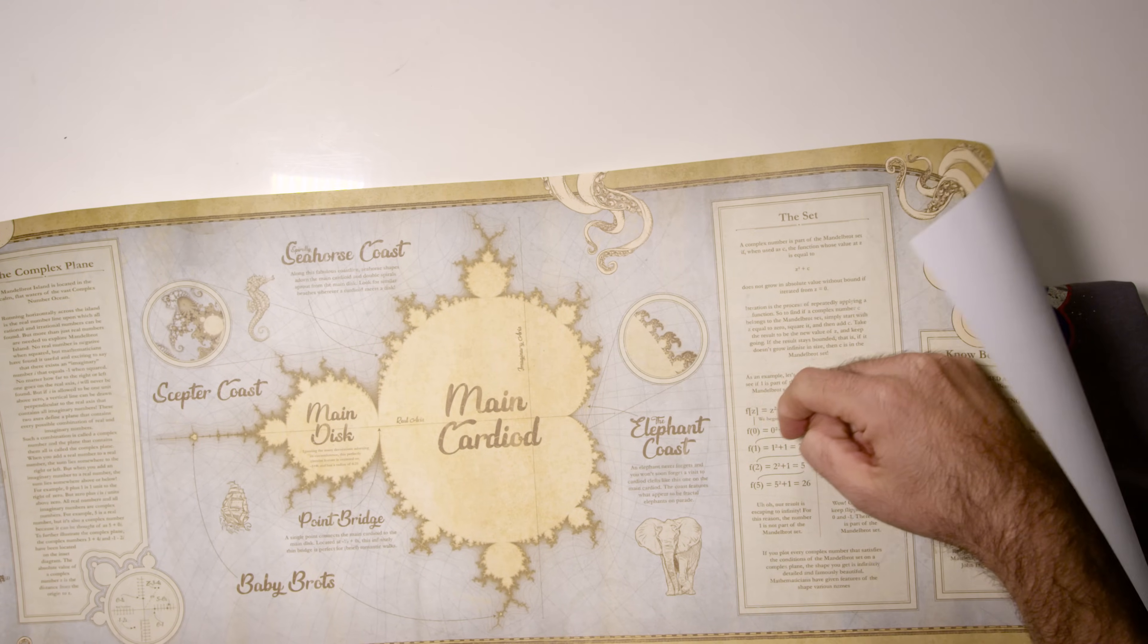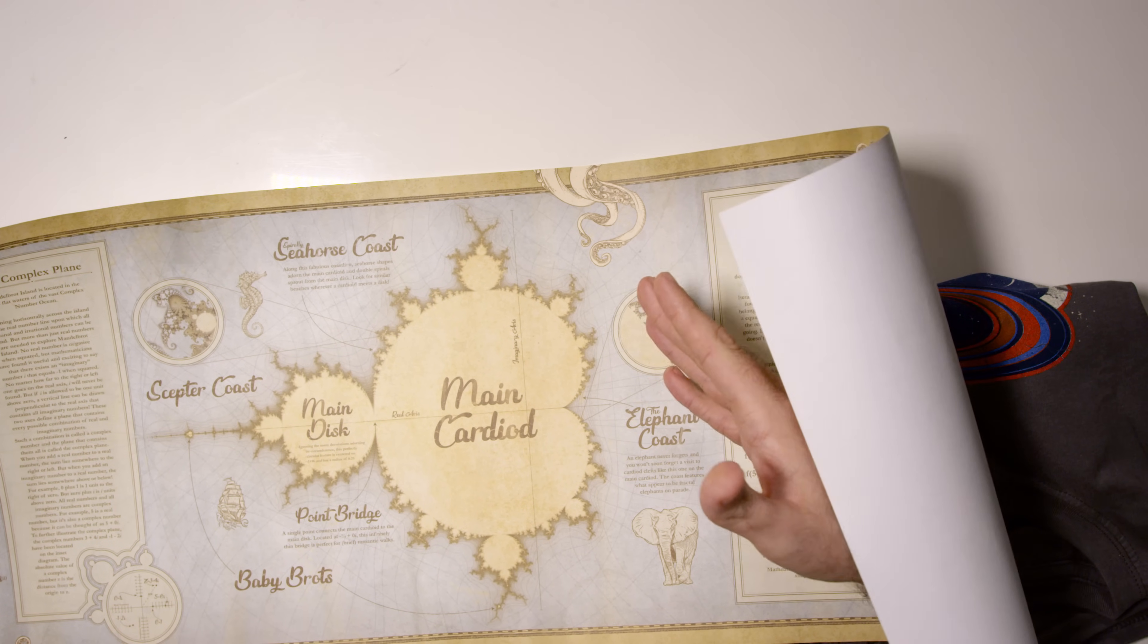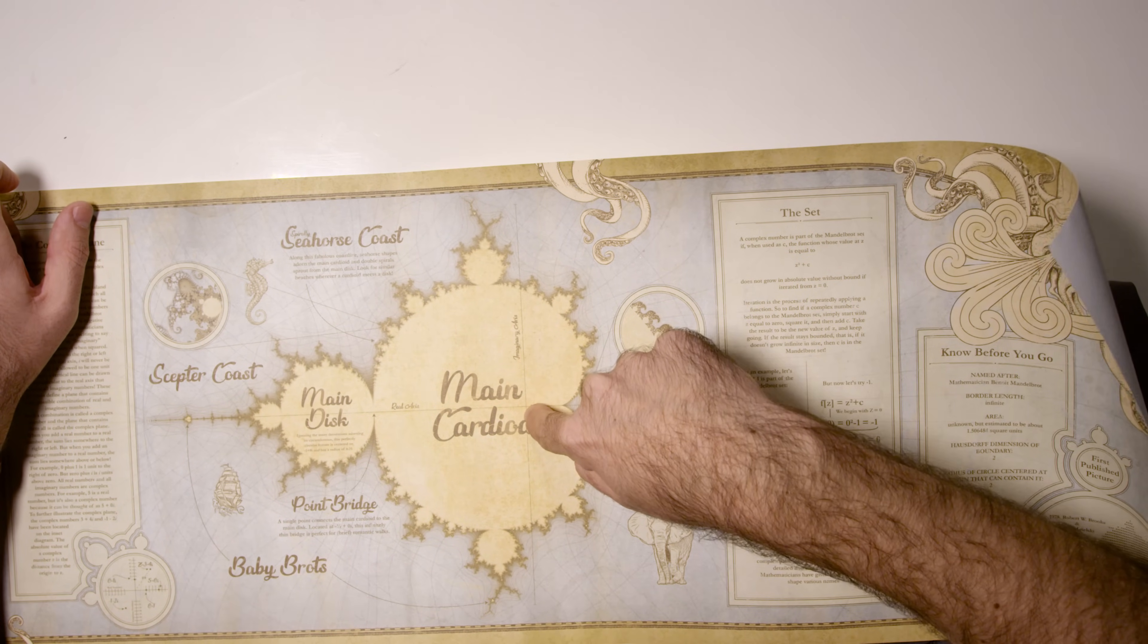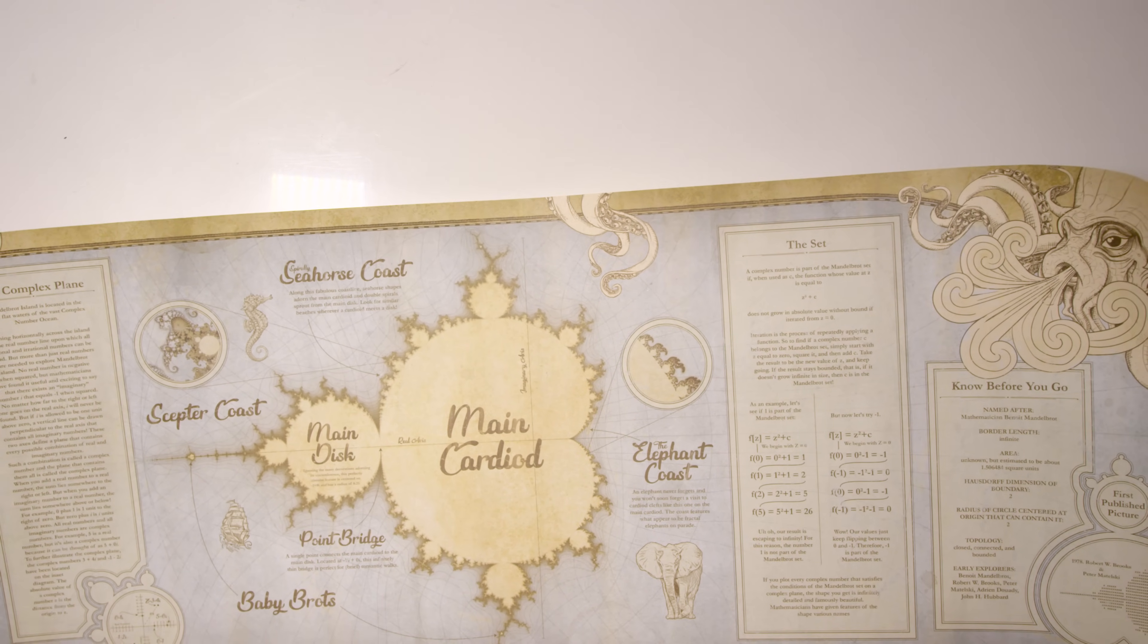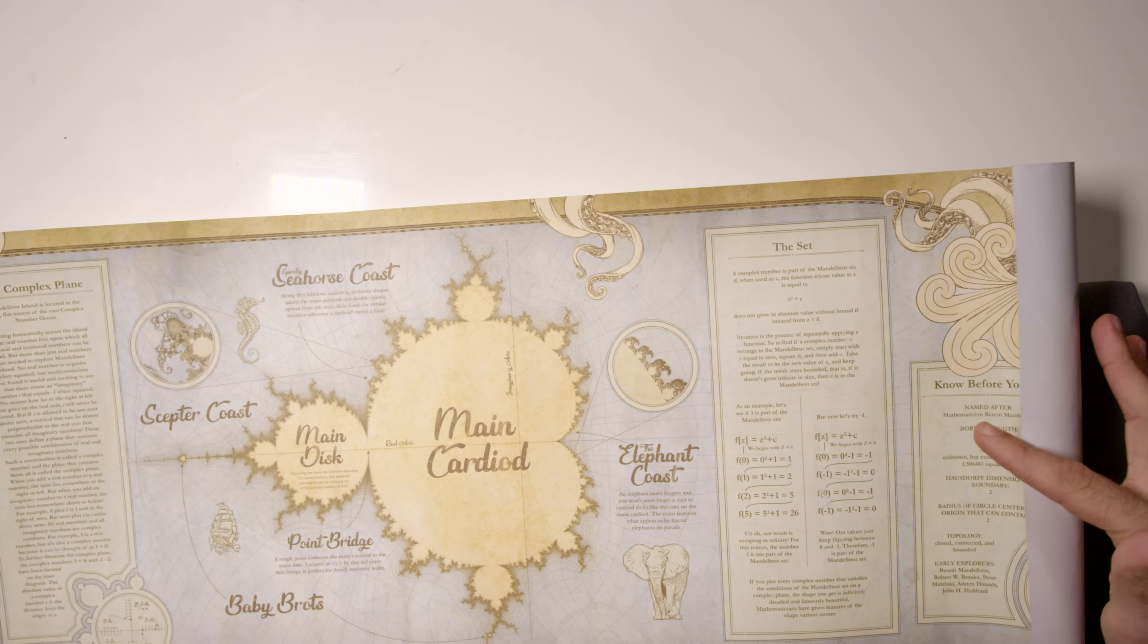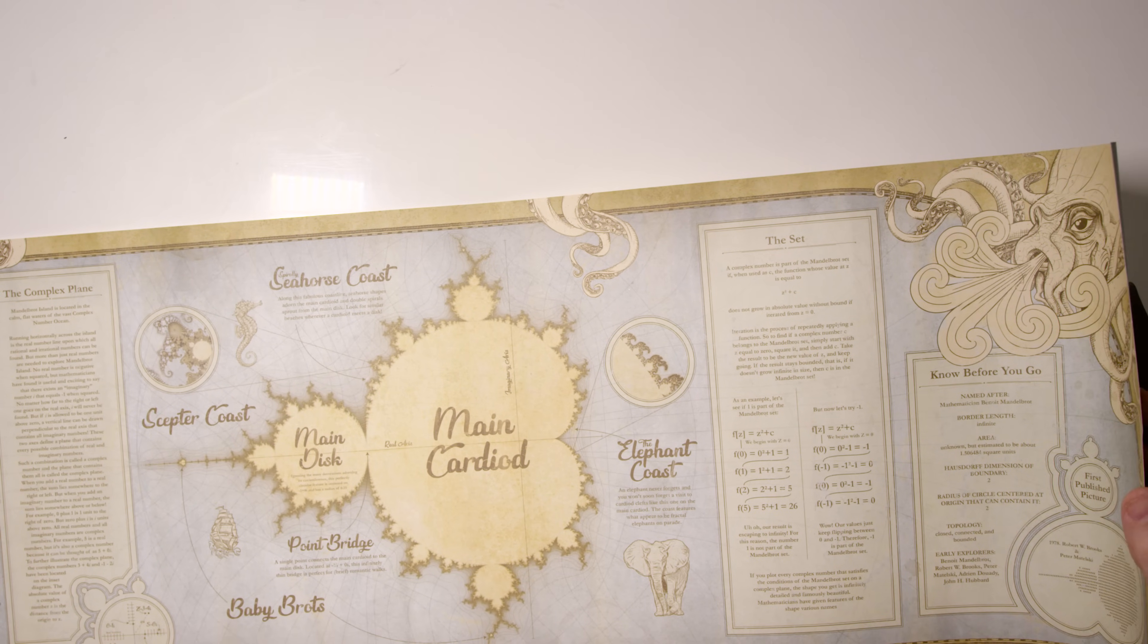A really cool thing that this poster points out is that while the perimeter of Mandelbrot Island may be infinite, but its area is not. We're not exactly sure what its area is. We do know that a circle can completely enclose the set that is centered at the origin with a radius of two. But right now, our best estimate for its area is about 1.506484 square units. So, there you go. Maybe someday we will find a way to find the exact area. It may not be rational. In fact, it might not be. I don't know. Boy, so much more to learn. Such an inspiring poster. Really, really love it. Thanks to John for helping me design this. I love this poster.